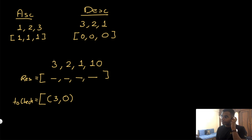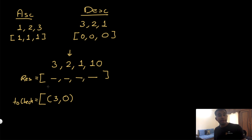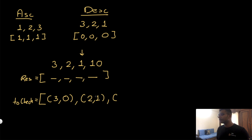Moving on to the number 2: before adding it to the list, I check if 2 is greater than any values in 'to check'. It's not greater than 3, so I just add it — 2 at index 1. Now I'm at the number 1: is 1 greater than 3? No. Is 1 greater than 2? No. So I add 1 at index 2.